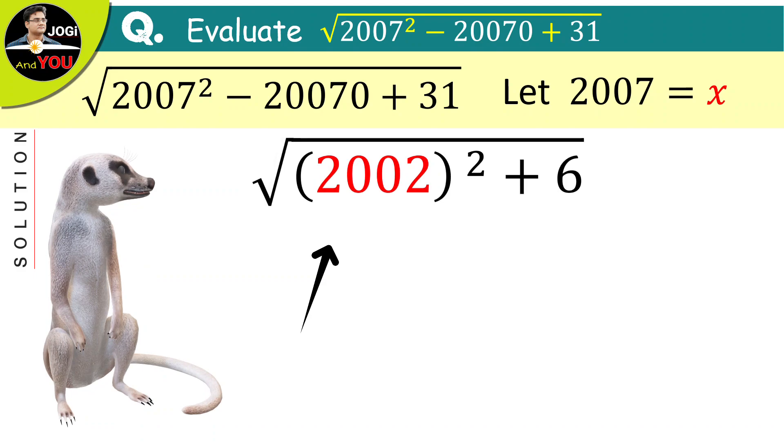Okay now, a square of 2002 means a very large number in which adding or subtracting 6 will have an almost negligible effect.